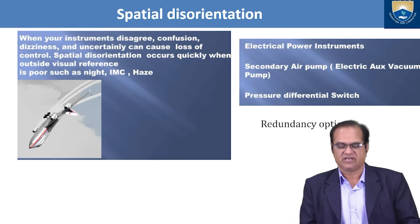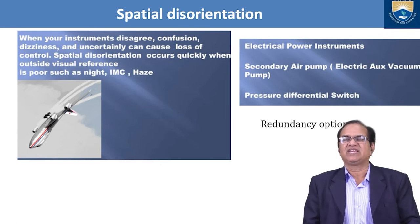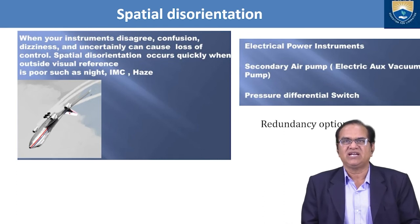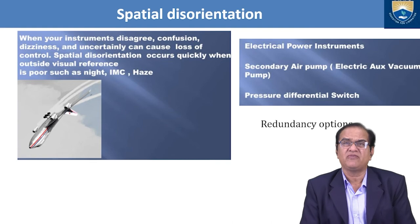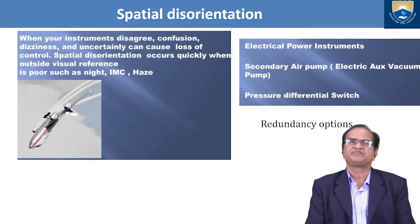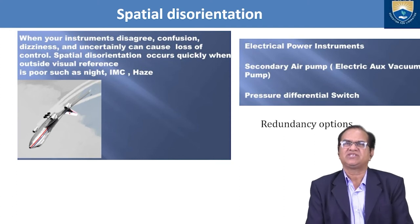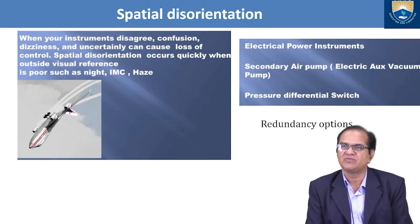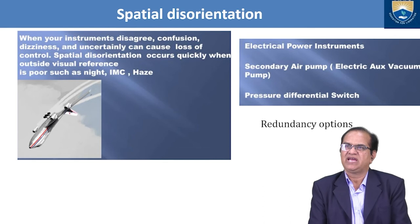Spatial disorientation: if your aircraft is disoriented from its given orientation and instruments disagree, confusion, dizziness, and uncertainty can cause loss of control. Spatial disorientation occurs quickly when outside visual reference is poor, such as at night, in IMC, or haze. Redundancy options include: electrical power instruments, secondary air pump, electric auxiliary vacuum pump, and pressure differential switch.